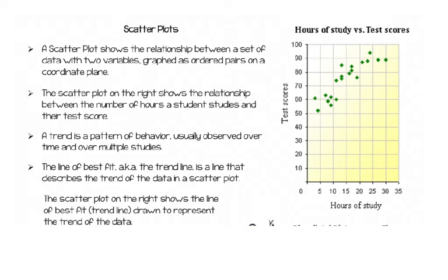So what is a scatterplot? When you did the guess my age activity, you created a scatterplot based on the ages you guessed compared with the actual ages. A scatterplot shows us a relationship between a set of data with two variables. The two variables in the guess my age activity were the guessed age on your x-axis and the actual age on your y-axis. We graphed those two sets of data as ordered pairs on a coordinate plane.